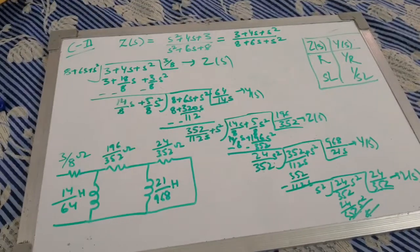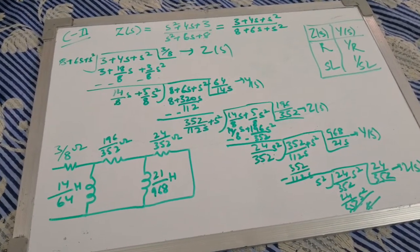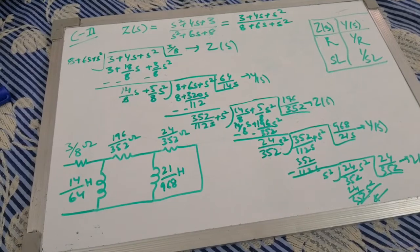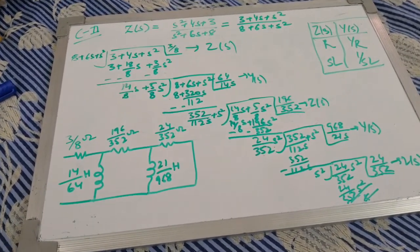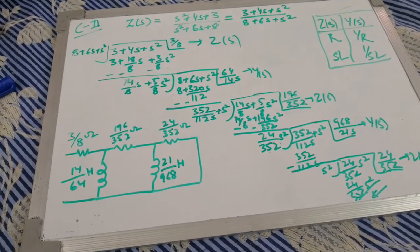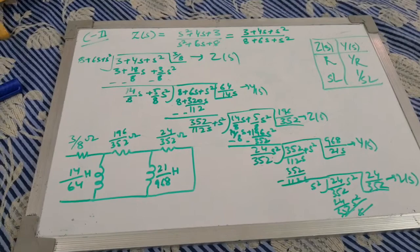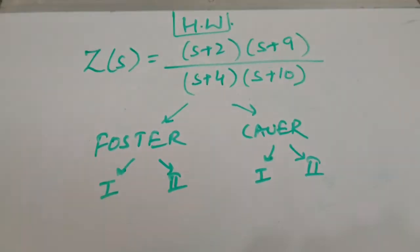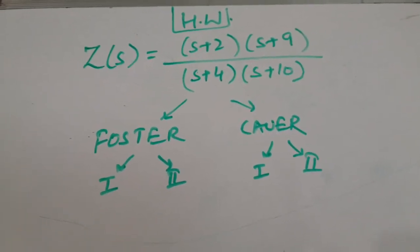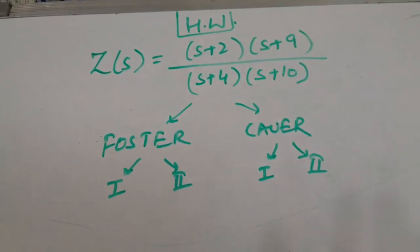The key tricks to remember: for Foster 1 you have to take the partial fractions of Z(s)/s; for Cauer 1, if the CFE gives negative quotients you must invert to Y(s) and then the first term in circuit design will be a parallel branch (Y), followed by z, y, z, y alternating. That's all. Your homework numerical for today is to make the Foster 1, Foster 2, Cauer 1, and Cauer 2 forms for Z(s) given as (s+2)(s+9) in the numerator and (s+4)(s+10) in the denominator.